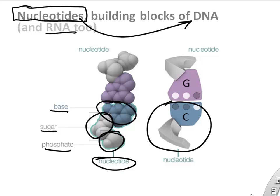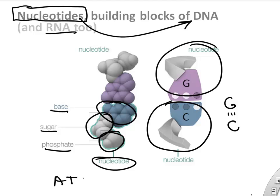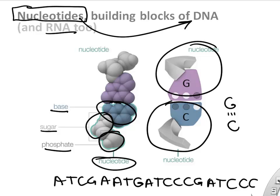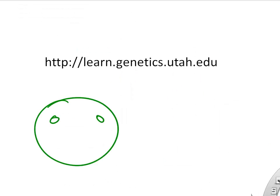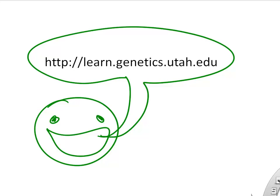Nucleotides are the building blocks — they're made of a phosphate, a sugar, and a base. G's always bind with C's, and A's with T's. A lot of times we're just going to write a single strand and pay attention to one of the single strands, writing it out just as a letter code.